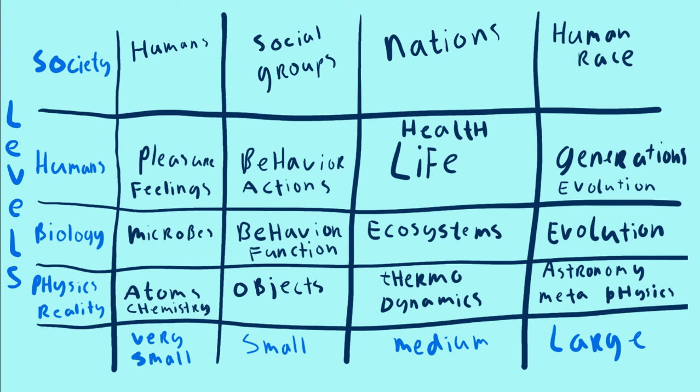We usually settle on one scale or level of aggregation and then focus on that. So there are people who are focusing on microbes, chemistry and pleasure and feelings, while other people are more focusing on larger scales like ecosystems, evolution, on these different parts of different scales, on different levels.